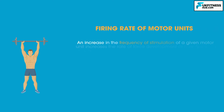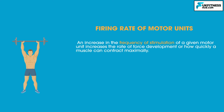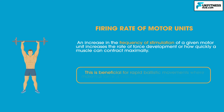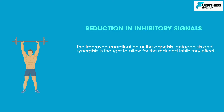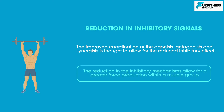An increase in the frequency of stimulation of a given motor unit increases the rate of force development, or how quickly a muscle can contract maximally. This is beneficial for rapid ballistic movements where maximal force is required in a very short period of time. Finally, the bodybuilder would have a reduction in inhibitory signals. The improved coordination of the agonists, antagonists and synergists is thought to allow for a reduced inhibitory effect, enabling greater force production within a muscle group.